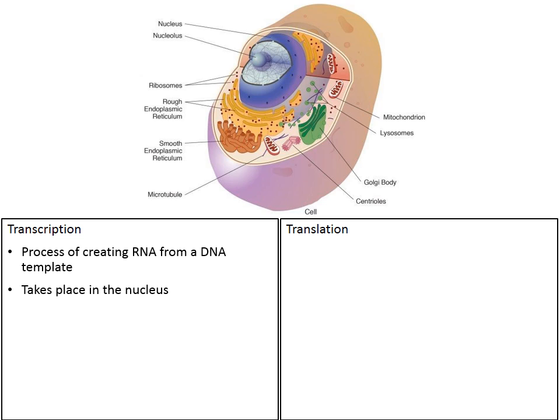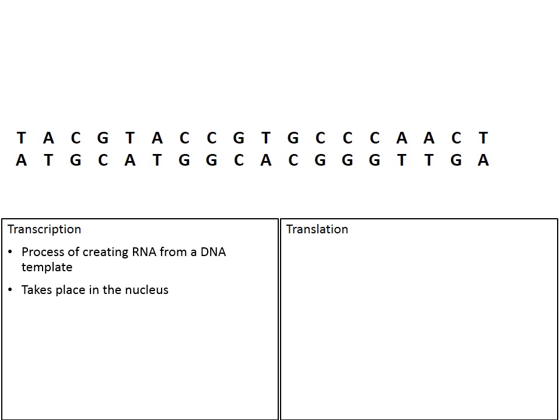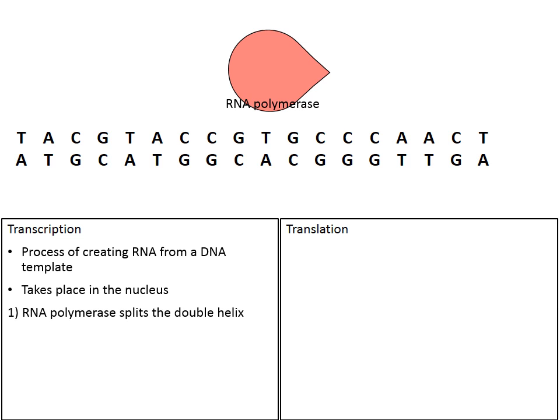This process is going to take place inside the nucleus of our cells. Here's a strip of DNA. Notice how adenine pairs to thymine and cytosine pairs to guanine. During the process of transcription, here's an enzyme with the name of RNA polymerase. RNA polymerase plays a really important role in this process.